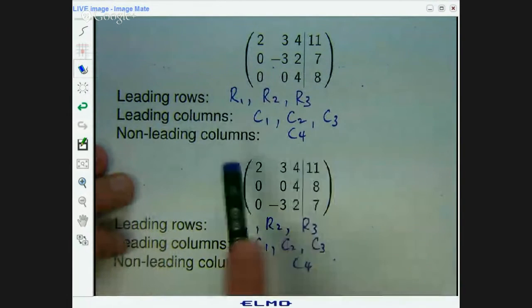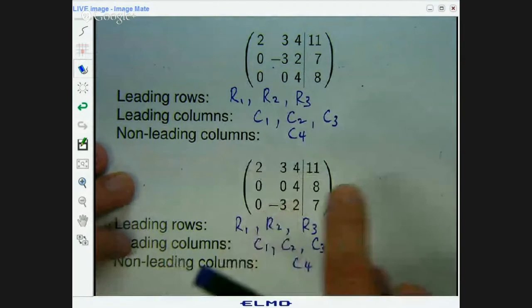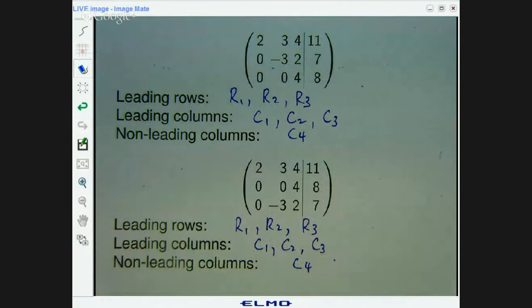What about this one? Well, you move down and you're going to the right, but then you've got to go back to the left. That is not a row echelon form.